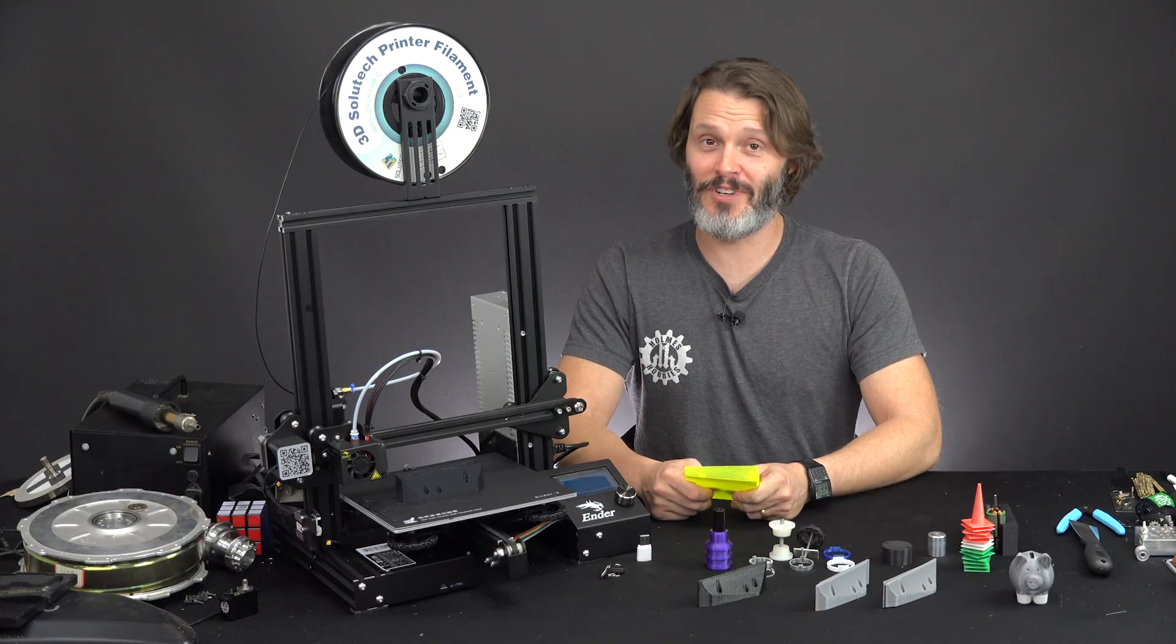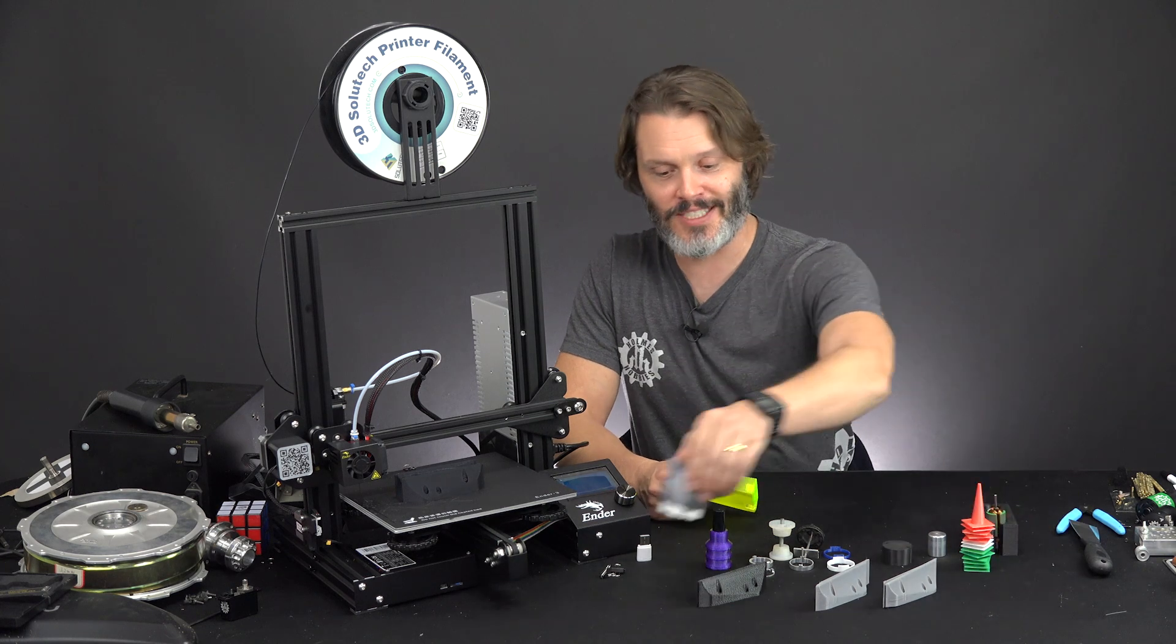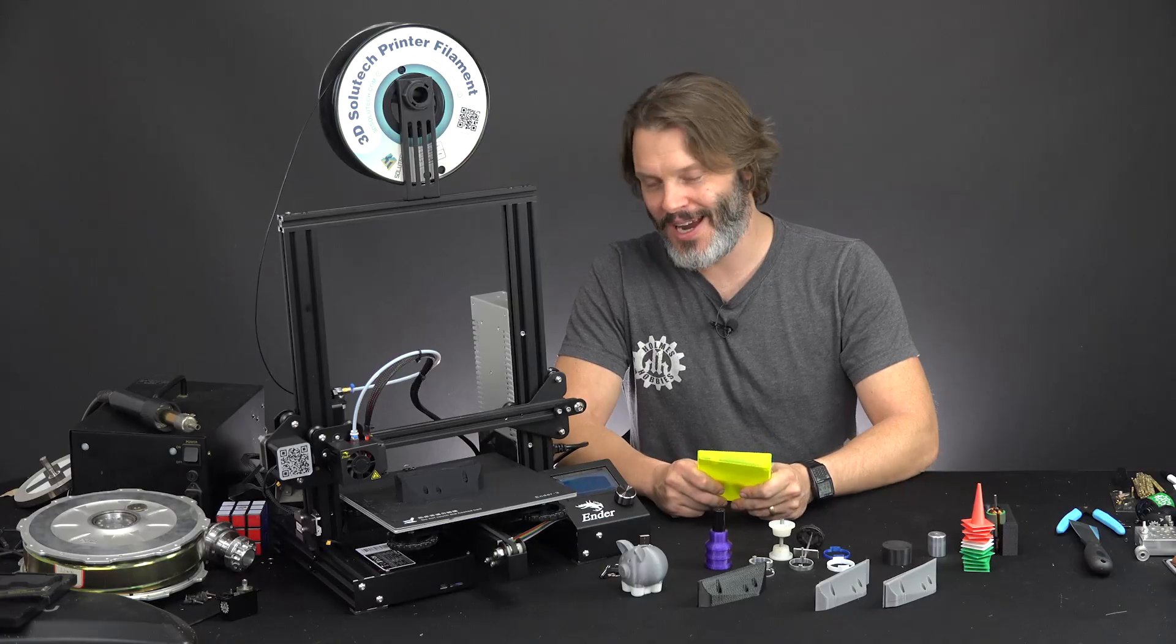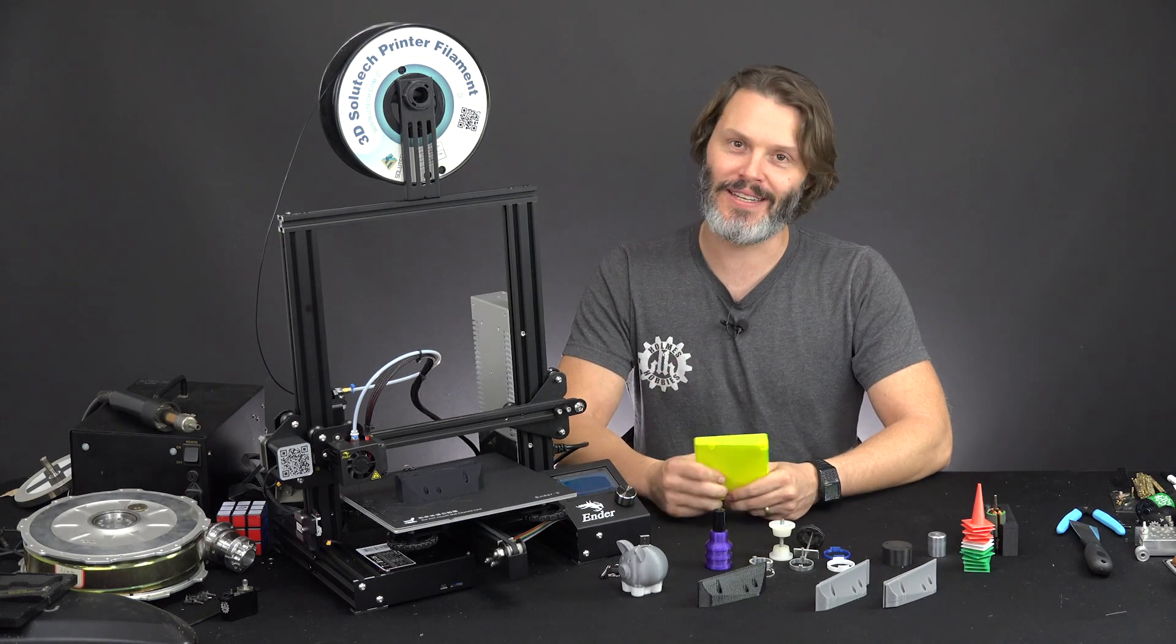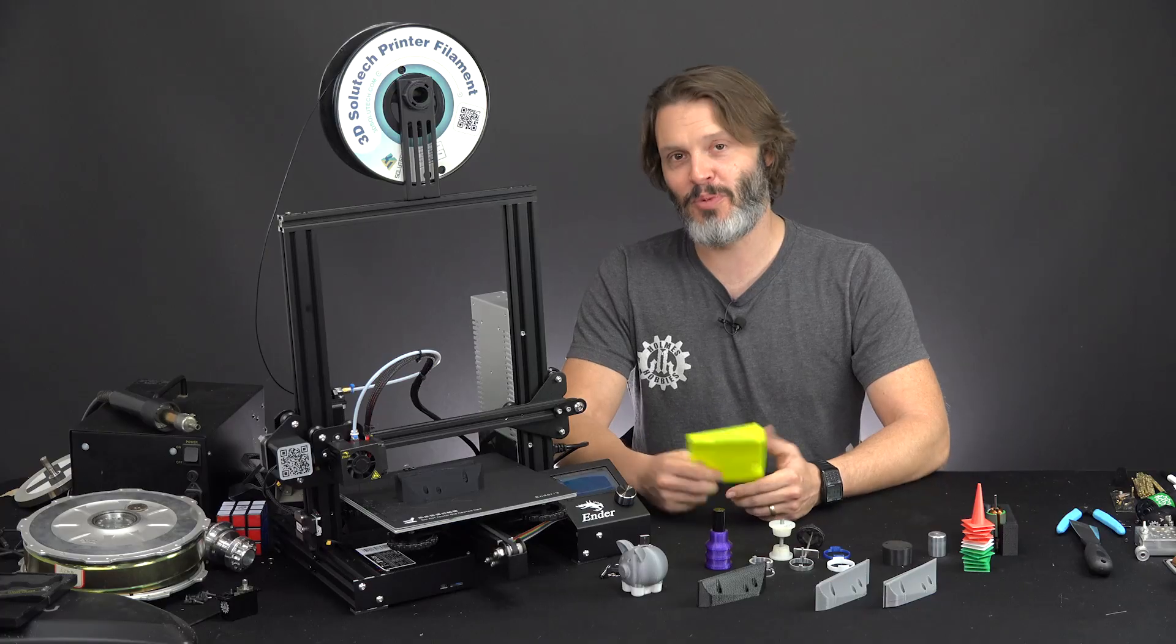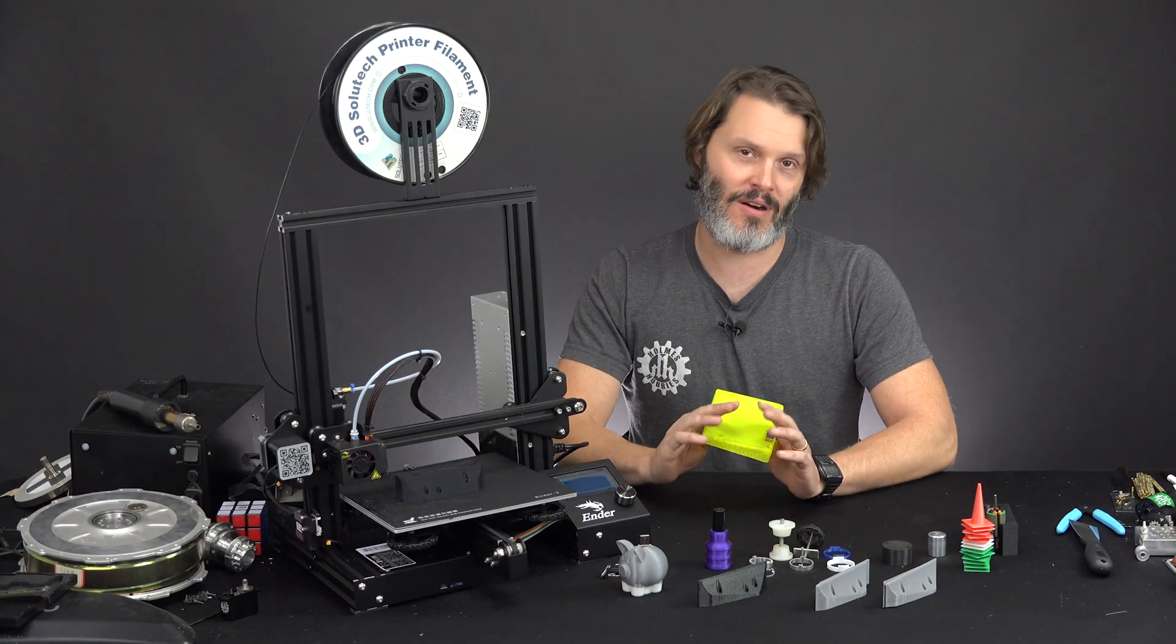So what gripes do I have with this printer? There actually aren't very many. Number one, the sample filament wasn't enough to print our sample. It's a pretty small gripe, but that's just maybe a little disappointing that they give you these files and then they give you some filament and you can't quite print them. So just be prepared for that. You'll need to get your own filament. I'm using 3D Solutech filament at the moment, but there are literally thousands and thousands of choices out there.